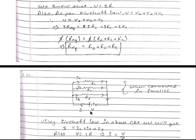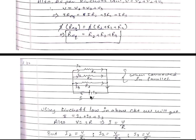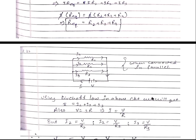Now the second part: what will be the formula if the three resistances are connected in parallel? I have drawn a diagram here where R1, R2, and R3 are connected in parallel, and voltage applied is V. Since the three resistances are connected in parallel, the voltage across all resistances will be the same but the current will be different. I have taken I1, I2, and I3 as the current flowing through R1, R2, and R3 respectively.